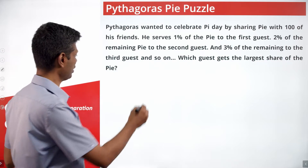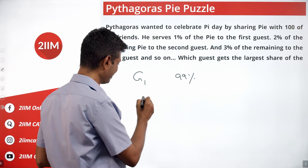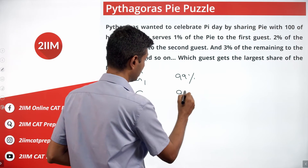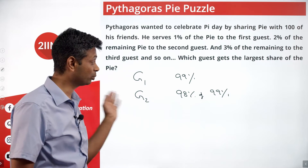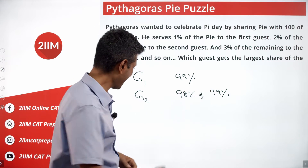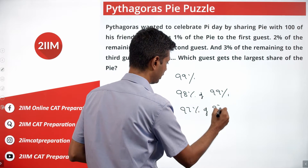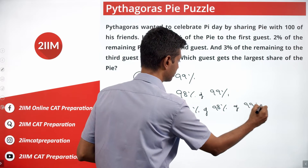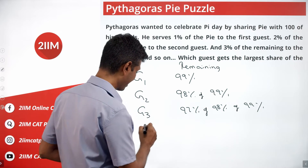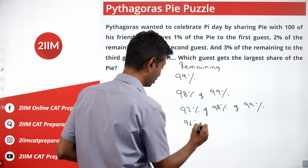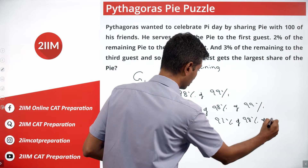After guest 1 leaves, what do we have remaining? We have 99%. After guest 2 leaves, we have 98% of 99% remaining - 99% was there, this guest takes 2% of whatever is there, so 98% of 99% remains. After guest 3 leaves, we have 97% of 98% of 99%. After guest 4 leaves, we have 96% of 97% of 98% of 99%. We are tracking what is remaining.